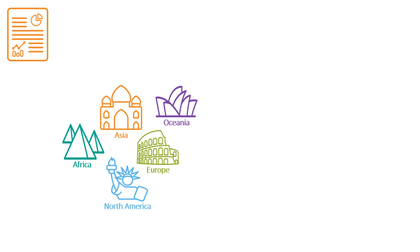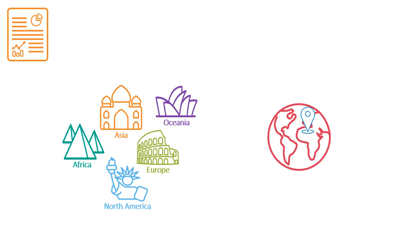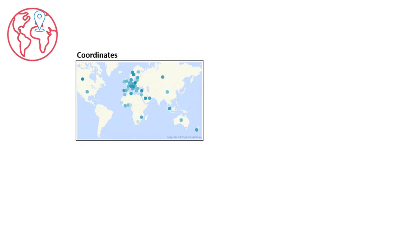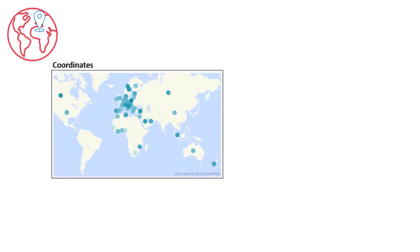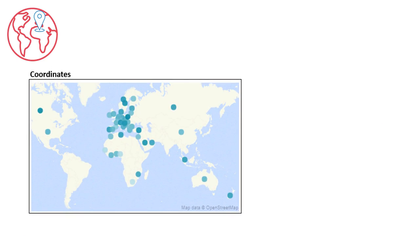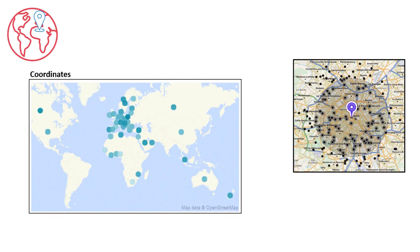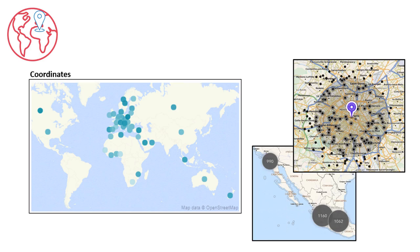When location is a critical component of your analysis, geomaps can be very helpful. A geomap overlays data on a geographic map. Four different types of geomaps can be created in Visual Analytics – coordinate, region, bubble, and contour. Coordinate maps, also known as dot distribution maps or dot density maps, help with detecting spatial patterns and understanding the distribution of data over a geographic region.